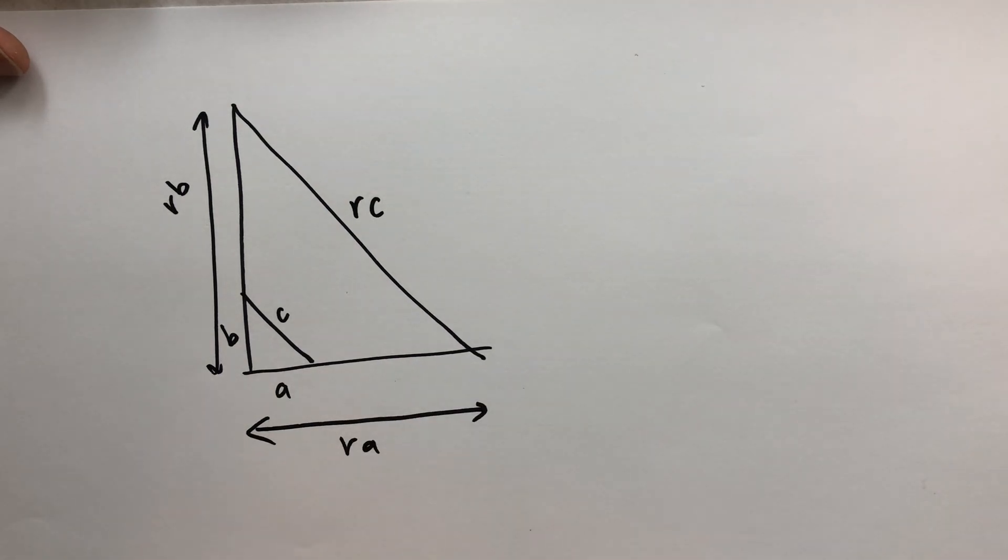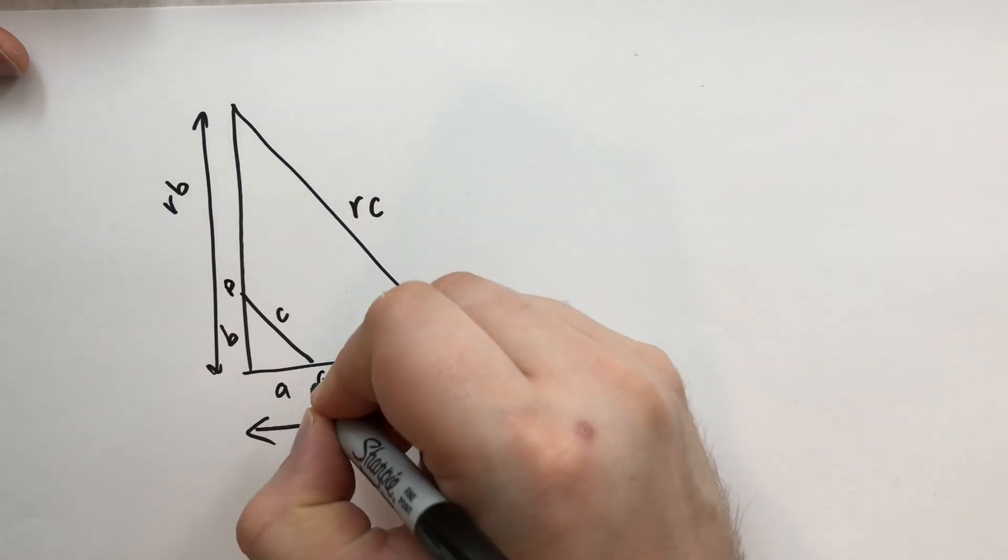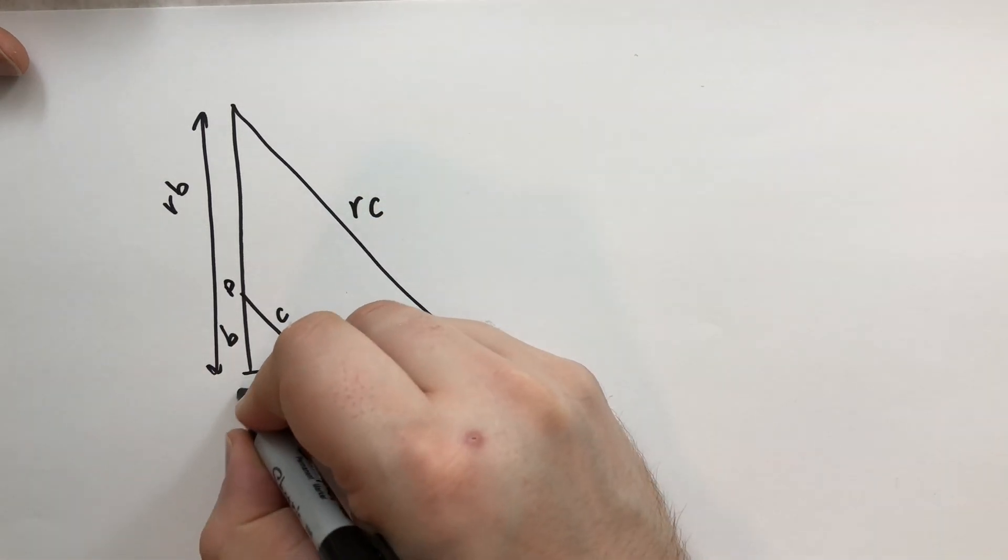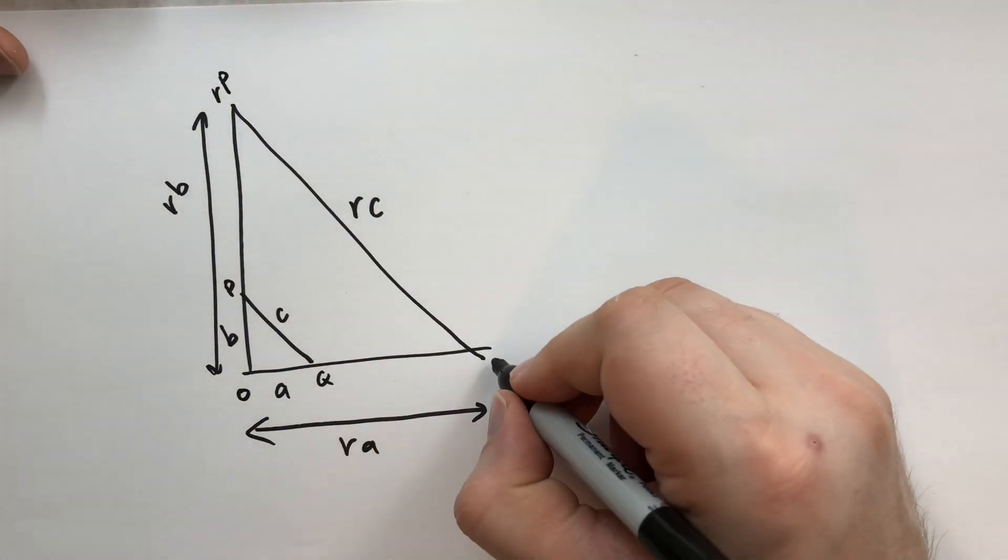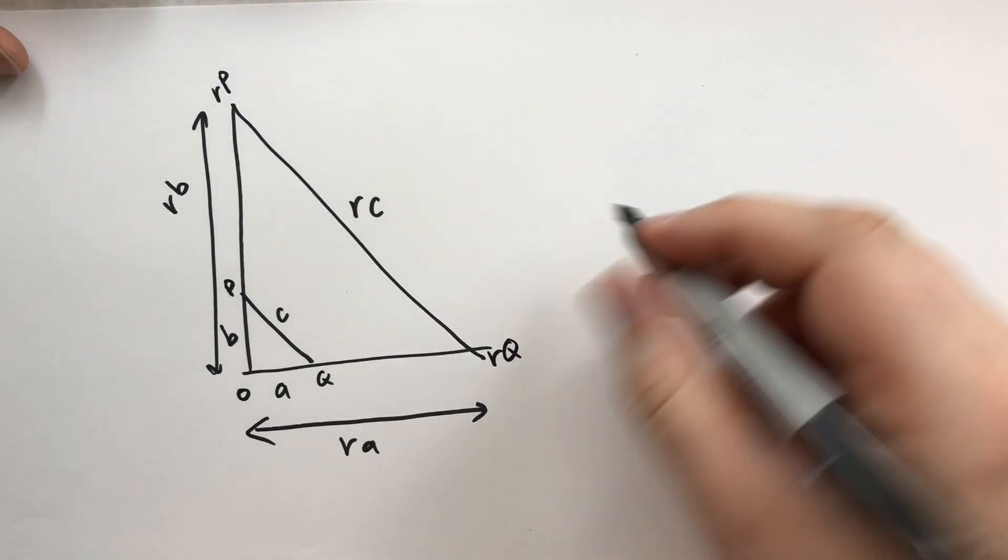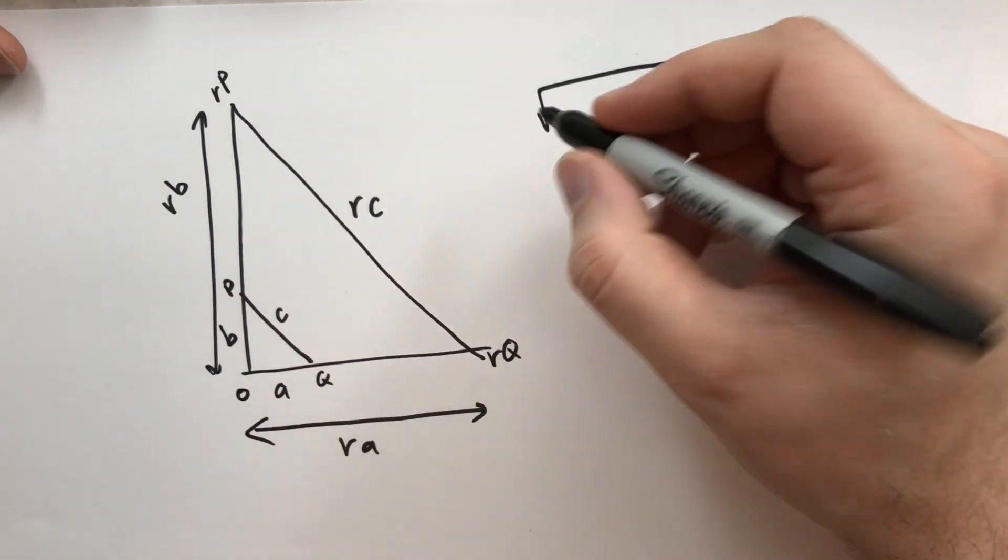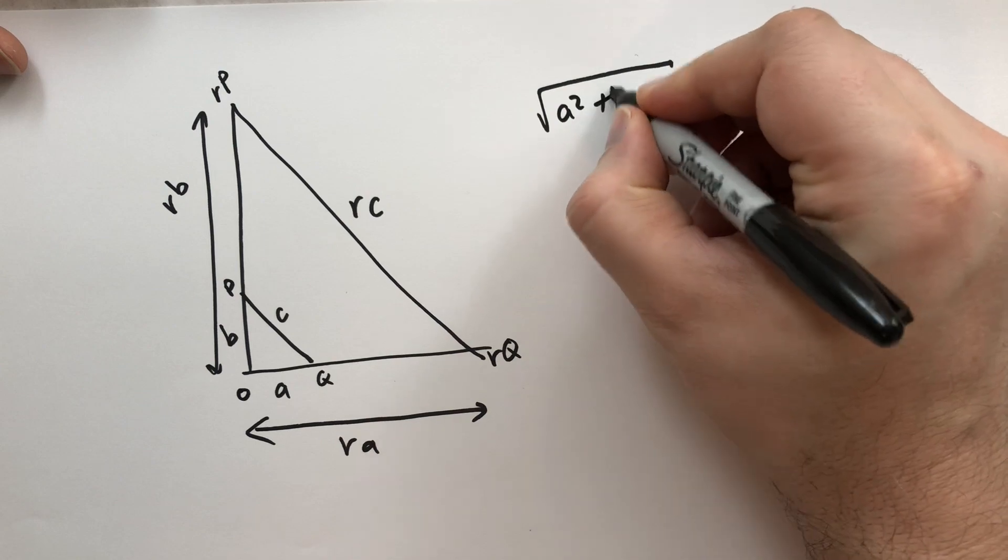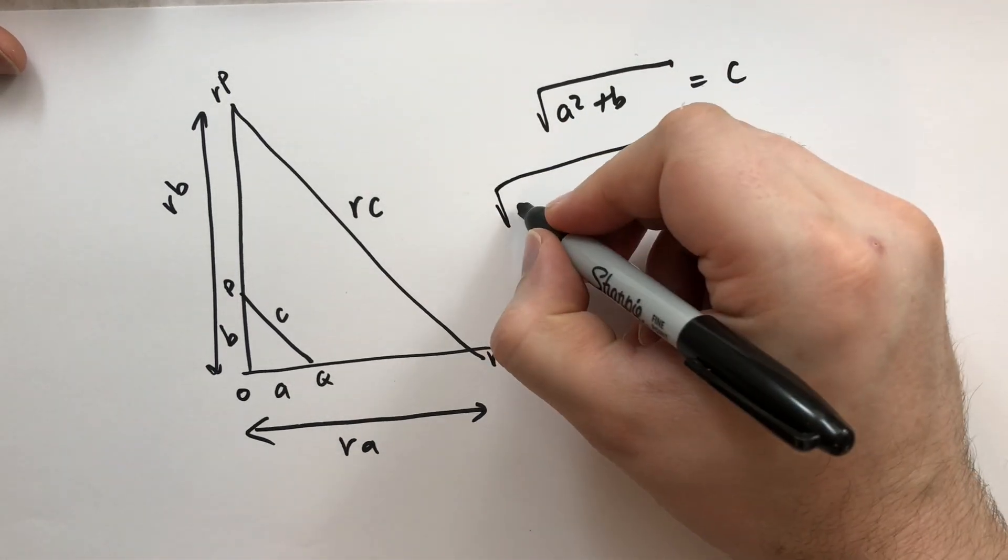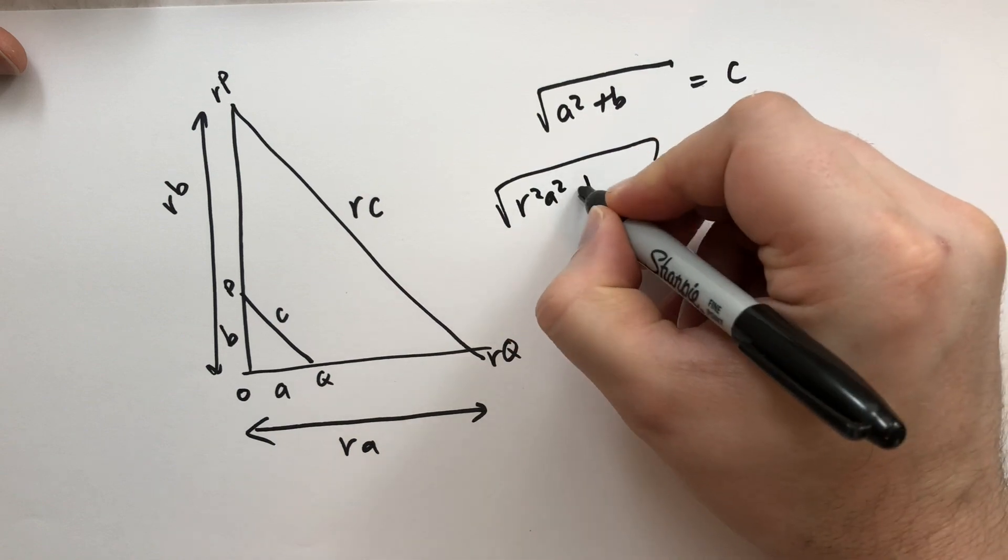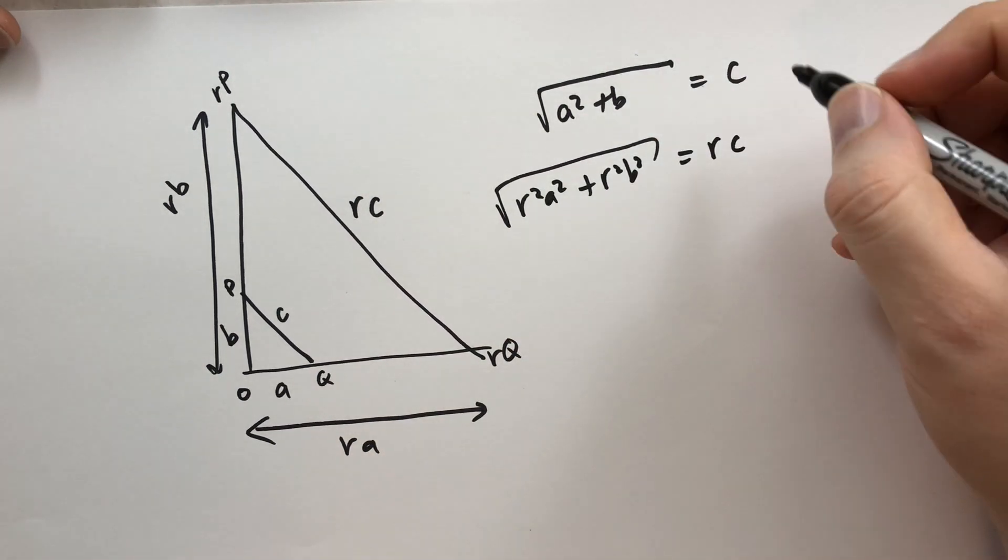So we have p, q, and we have o. We're going to call this point up here rp. You can't really multiply points by numbers, but we're going to call it that. And so we have the distance between p and q. That's going to be the square root of a² plus b² equals c. And then the square root of r²a² plus r²b² is going to equal rc.